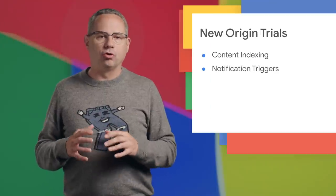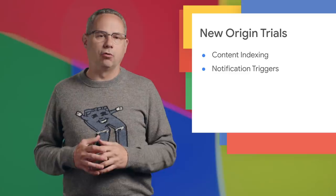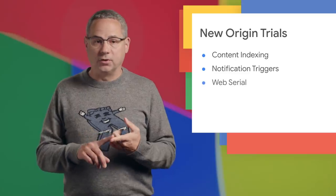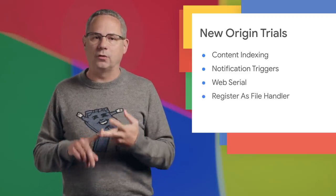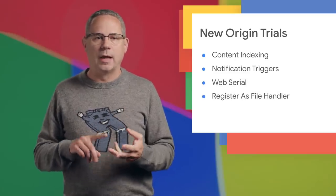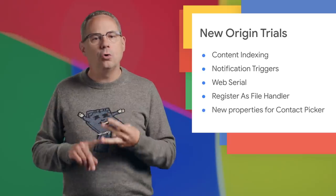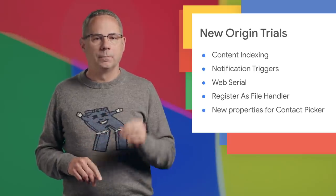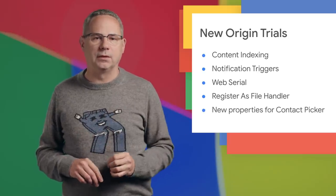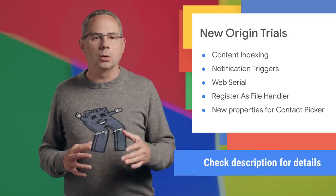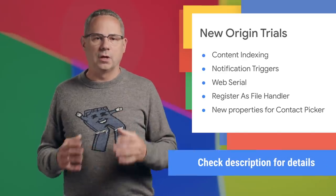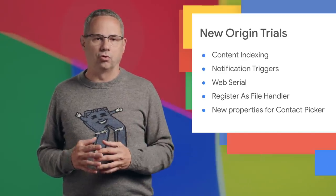There are a few other origin trials starting in Chrome 80: Web Serial, the ability for PWAs to register as file handlers, and new properties for the contact picker. To see a complete list of features in origin trial or learn more, check out the updates post linked in the description.